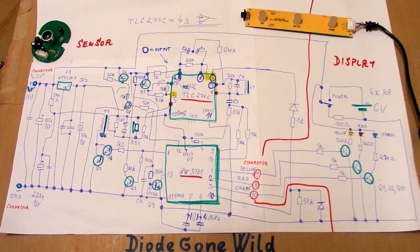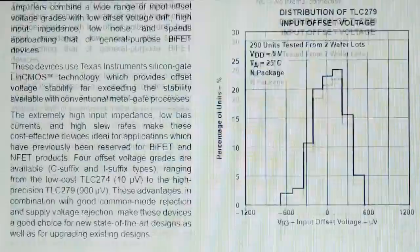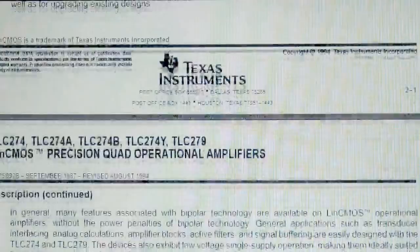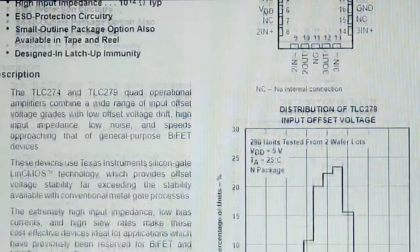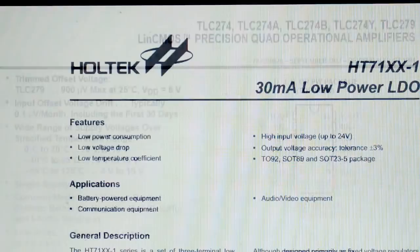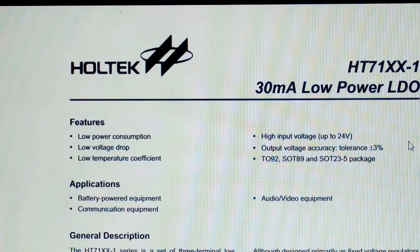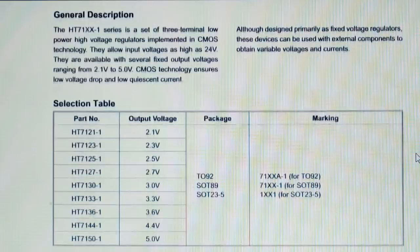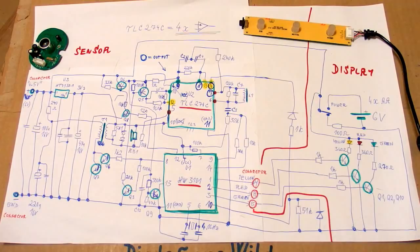So here you can see the datasheet of the op-amp with the pinout and other parameters. And this one wasn't so hard to find. There is also the datasheet of the voltage reference, I mean voltage regulator. And this one is a three volt version. But I wasn't able to find the datasheet of the microcontroller.